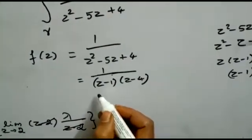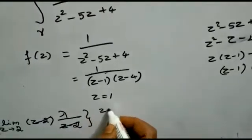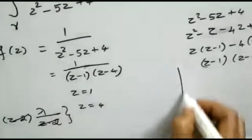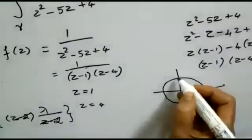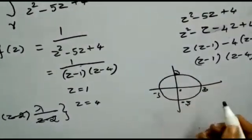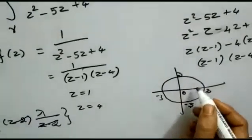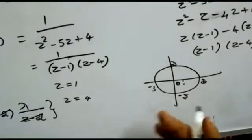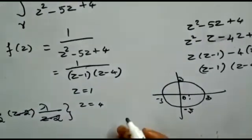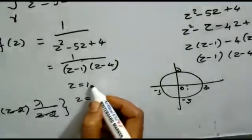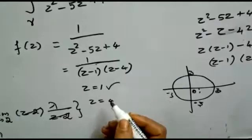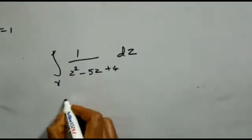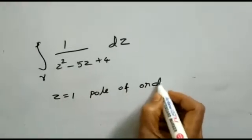The singular points are z equal to 1 and z equal to 4. The center of the curve is at the origin and the radius is 3. The point z equal to 4 lies outside the curve, so its residue contribution is 0. The point z equal to 1 lies inside the curve and is a pole of order 1, so we proceed to calculate its residue.